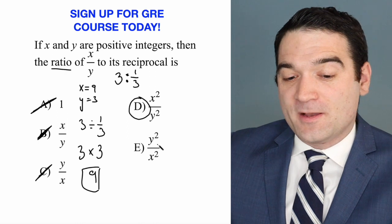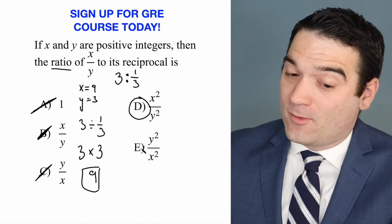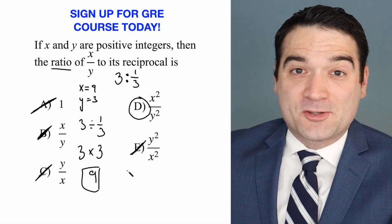Let's double check the last one just to be safe though. 3 squared is 9 over 9 squared, 81, not equal to 9. So the correct answer here is D.